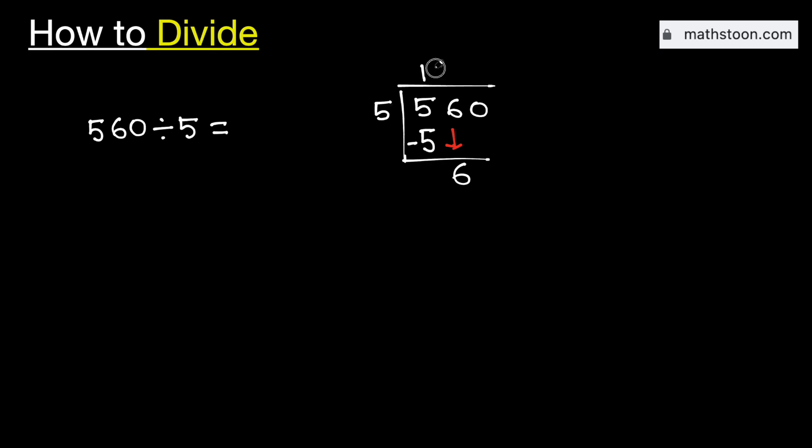We know that 5 times 1 is 5. Subtract, we get 1. Now this 1 is less than 5, that is why we need to bring down this adjacent 0 here.